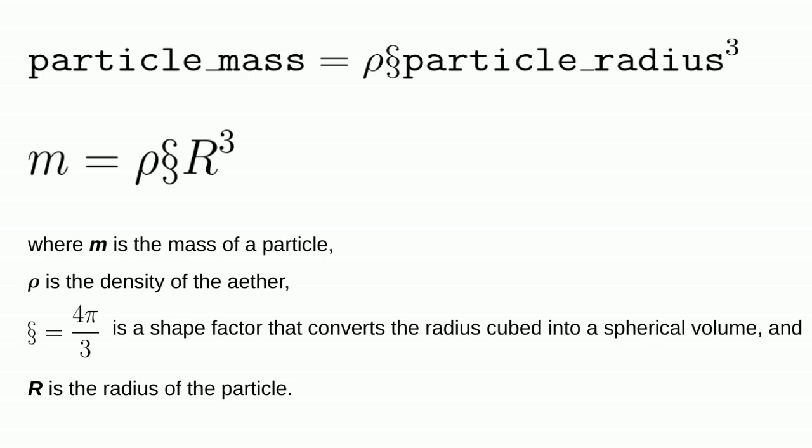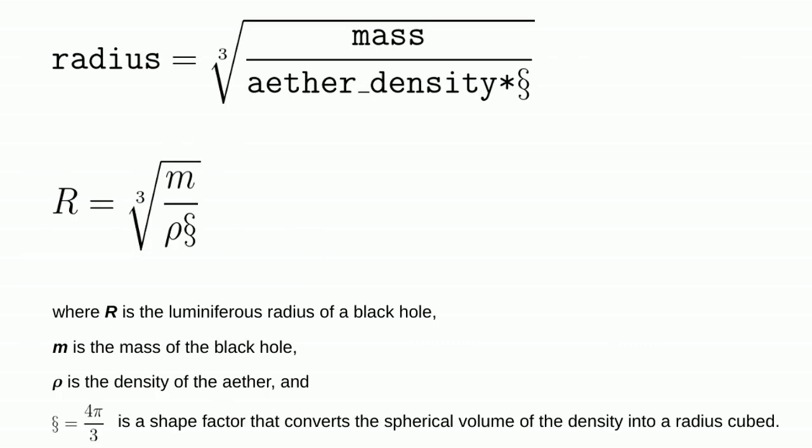Nikola Tesla described subatomic particles as whirling ether. That whirling ether has a mass equal to the ether density times the particle's volume. The ether within electrons, neutrons, protons, and all other subatomic particles is whirling at the speed of light. Consequently, all such particles are black holes. Rearranging the previous equation, it is easy to use the mass of such particles to find the luminiferous radius beneath which the ether is whirling at the speed of light.